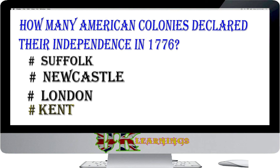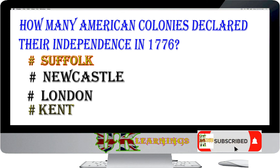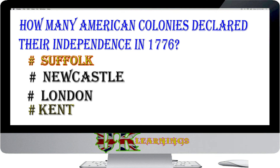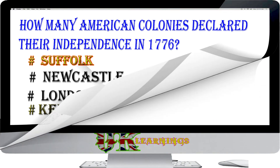Where was one of the Anglo-Saxon kings buried with treasure and armour? Options: Suffolk; Newcastle; London; Kent. The answer is Suffolk. The burial place of one of the kings was at Sutton Hoo in modern Suffolk. This king was buried with treasure and armour, all placed in a ship which was then covered by a mound of earth. Scotland and Wales remained free of Anglo-Saxon rule.